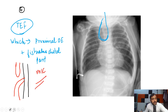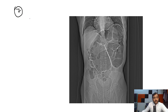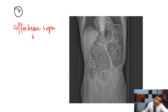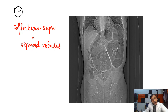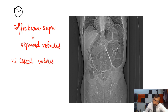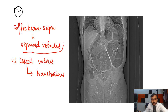This is the classical case of coffee bean sign, and it is seen in sigmoid volvulus. We need to differentiate sigmoid volvulus from cecal volvulus. In cecal volvulus you will see haustrations, but no haustrations are seen in sigmoid volvulus.